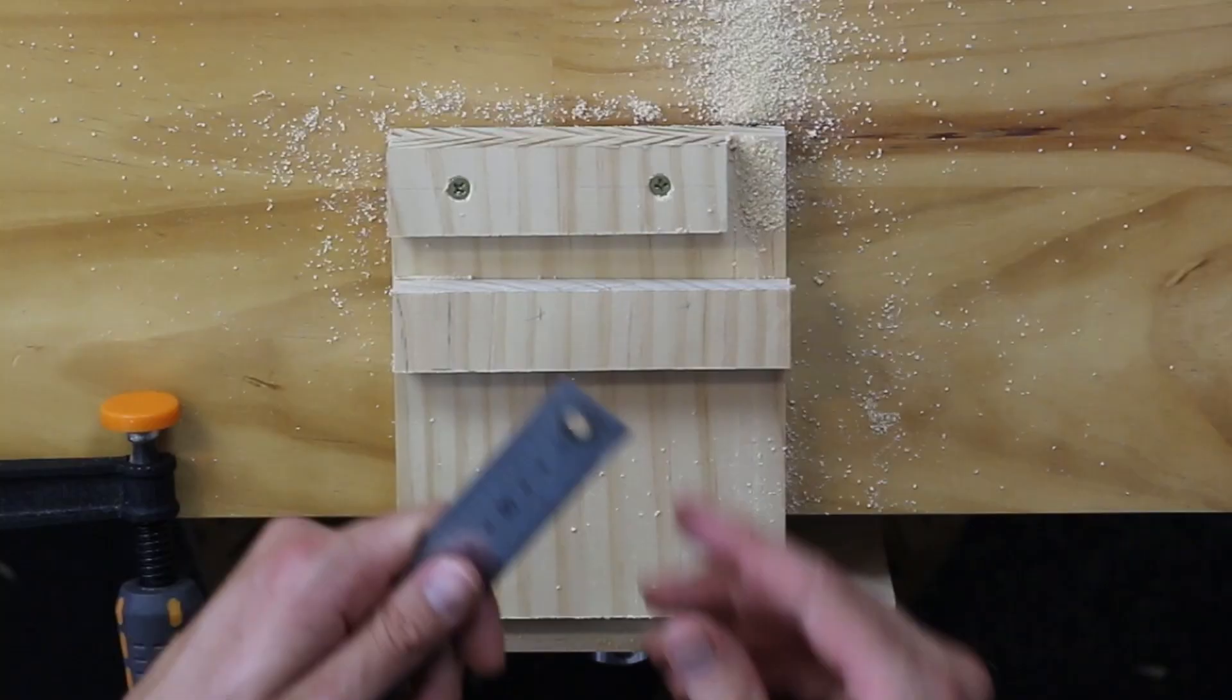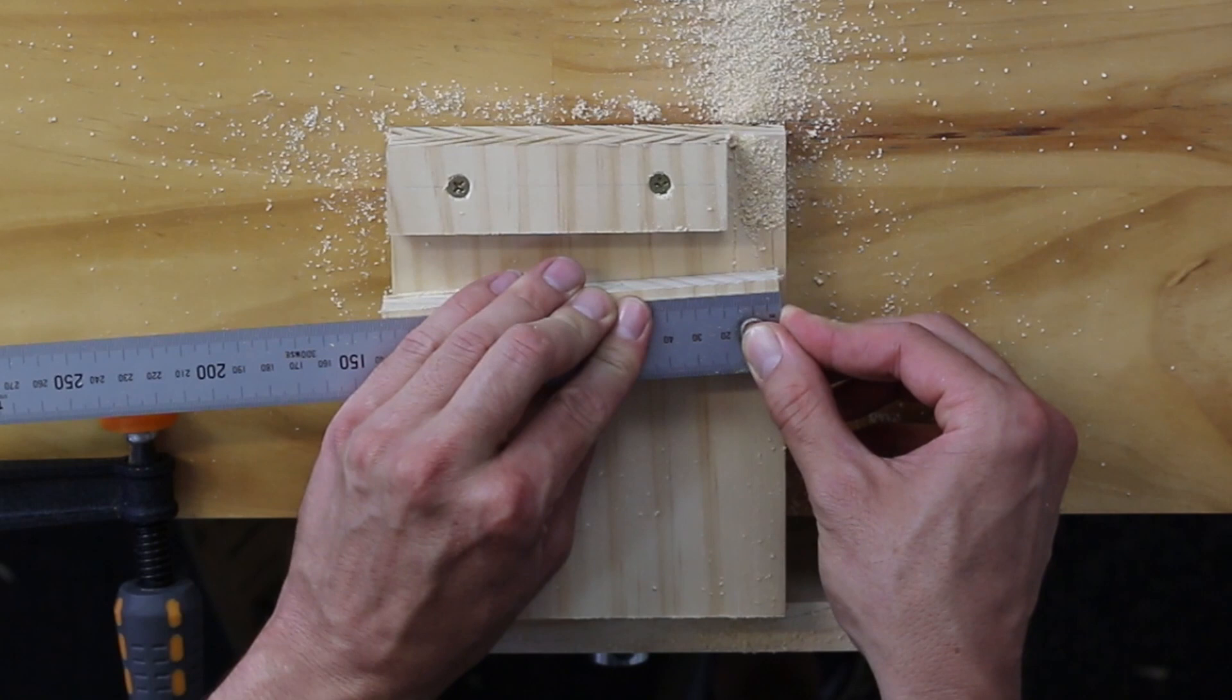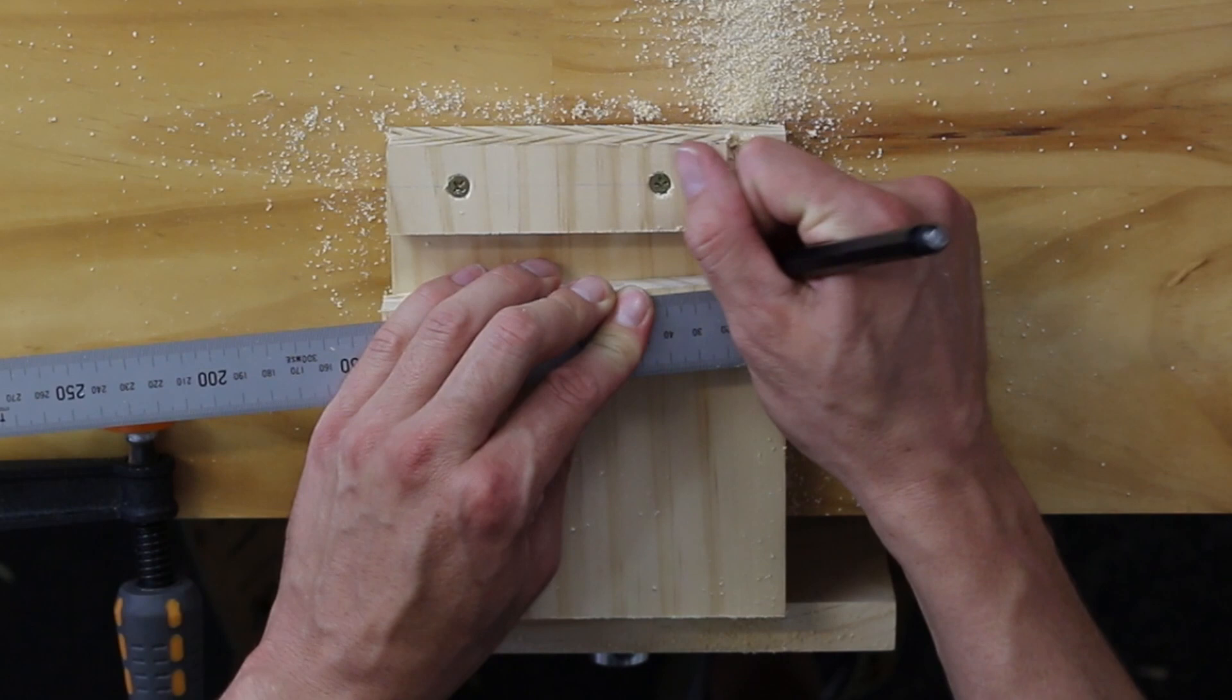We will now prepare the timber to remove 20mm from its overall length. To do this, line your metal rule up against one edge and mark back 20mm.